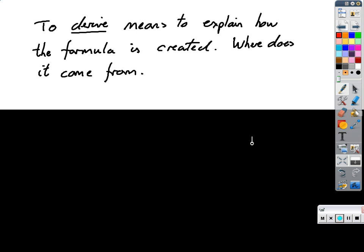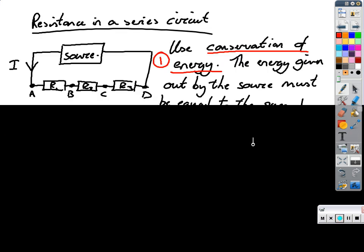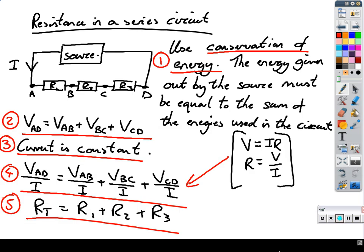Where does the derivation come from, how do we derive something? The first one we're going to look at is the resistance in a series circuit. Here's the diagram on the left hand side. We use conservation of energy. Conservation of energy means making sure the voltage is the same around the circuit.